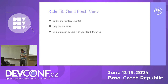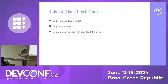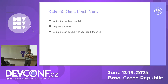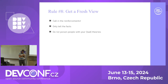Rule number eight: Get a Fresh View. Sometimes you run into a dead end and have no clue where the bug is. Now is the time to call in the reinforcements. The very important thing is: when you call them in, tell them only the facts of the problem — don't tell them your theory. You've been hunting this bug for hours, maybe days, and you've proven your own theory doesn't work. Don't poison other people with your theory. Just tell them the facts and let them come up with a new theory that hopefully leads to finding the problem.